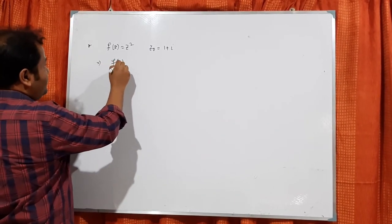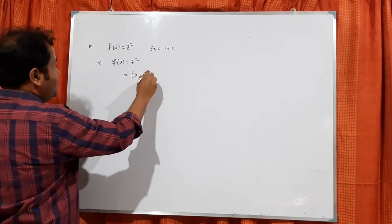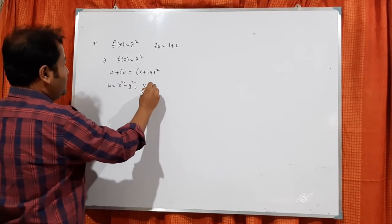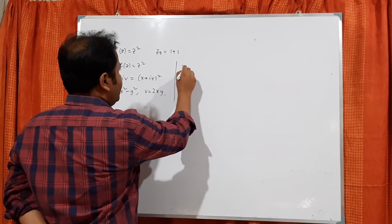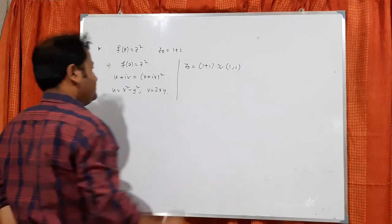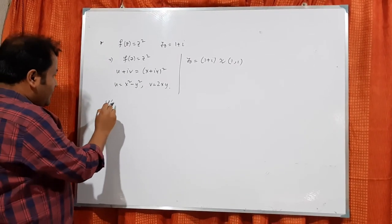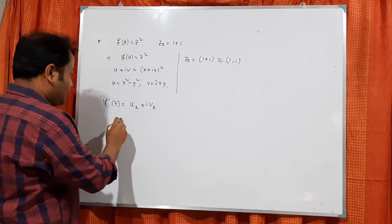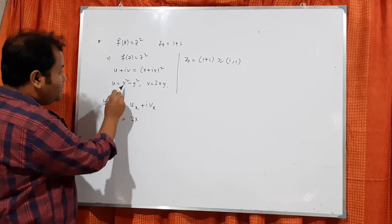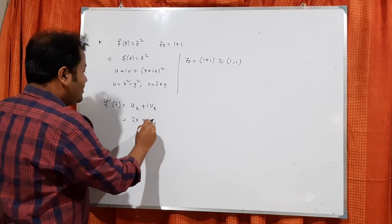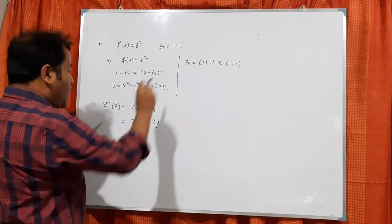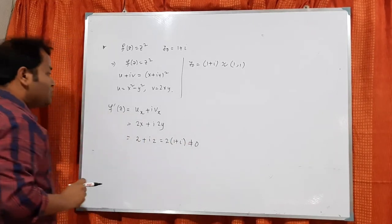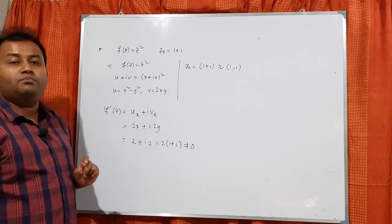For f(z) = z² = (x+iy)² = u+iv, we get u = x²-y² and v = 2xy, and the point z0 = 1+i corresponds to (1,1). Now f'(z) = ux + i·vx = 2x + i·2y. At the point (1,1), f'(z0) = 2 + 2i = 2(1+i), which is nonzero. Therefore the mapping is conformal at z0 = 1+i.